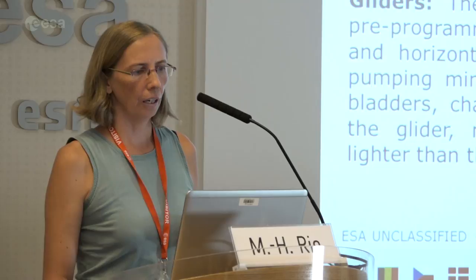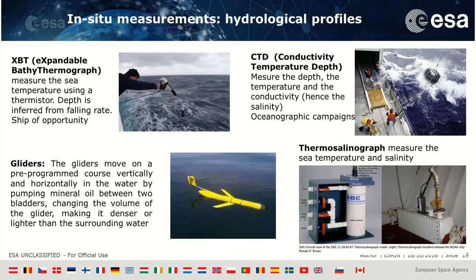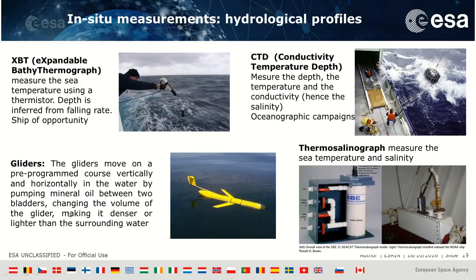The first kind of measurement provides profiles of temperature and salinity. XBTs — expendable bathythermographs — measure temperature with a thermistor, inferring depth from the falling rate. CTDs measure conductivity, temperature, and depth during oceanographic campaigns going to a target depth. Gliders also measure temperature and salinity, moving on a pre-programmed course vertically and horizontally by pumping mineral oil between two bladders, changing their volume to make them denser or lighter than surrounding water.